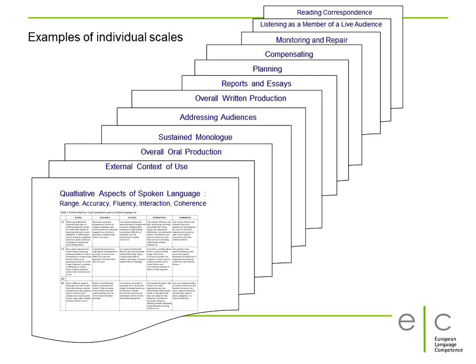This demonstrates what was meant by describing the CFR as a comprehensive overview of state-of-the-art linguistics focusing on practical communication. Language use, seen as social interaction, includes a great variety of aspects and specific skills, some of which include oral production, listening as a member of a live audience, written production, planning, and compensation. For each of these scales, or rather almost each of them, descriptors for all six levels are given. These extensive lists of descriptors have proven extraordinarily helpful for curriculum design, course book writing, teaching, assessing and test construction.